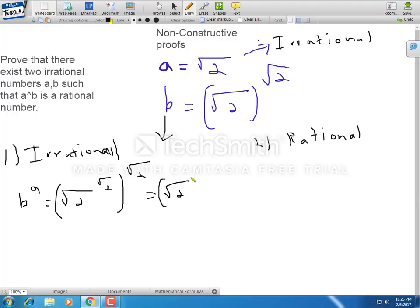this is the square root of 2 raised to root 2 times root 2, which is root 2 squared. And this is 2, which is a rational number.